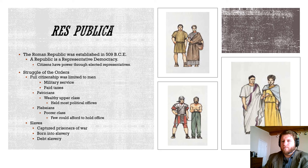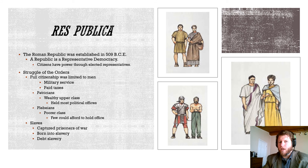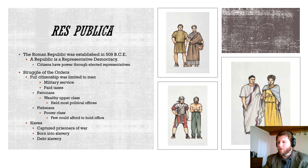Res publica — or 'the business of the people' — the Roman Republic, established in 509 BC, is a form of government known as a representative democracy. People don't hold power directly; they elect officials who hold the power on their behalf — exactly the type of system we have in the United States. The Romans had three branches of government, the same as we do.